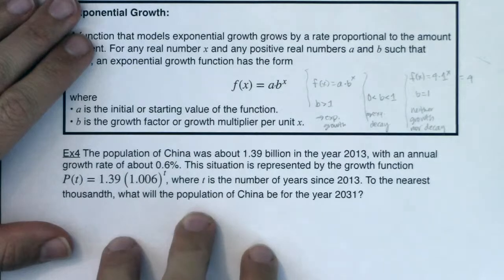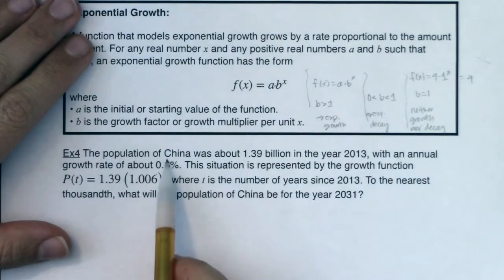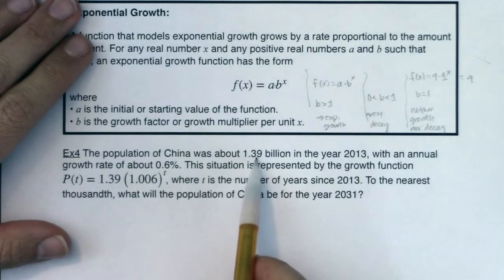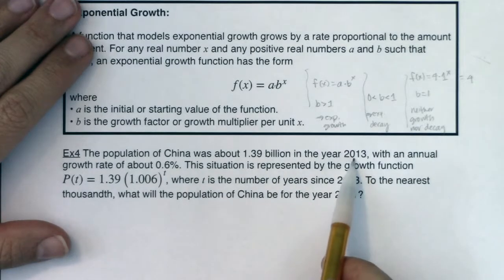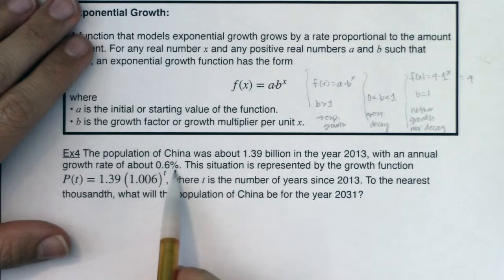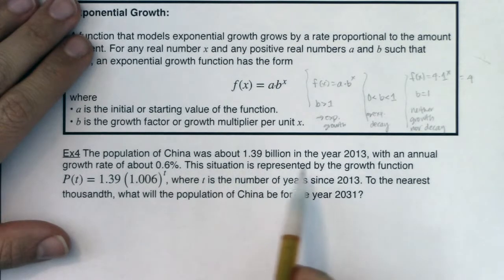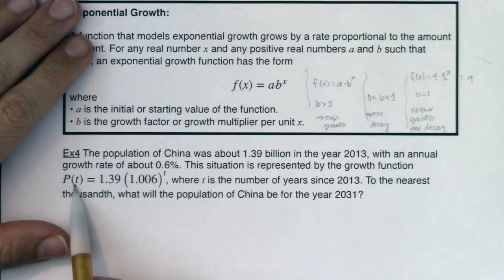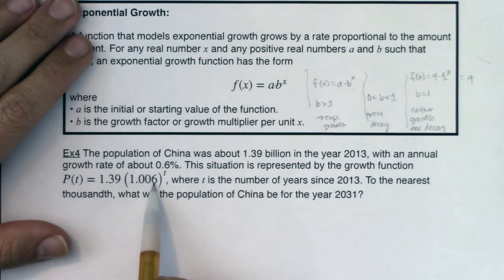So with that, let's take a look at a word problem. So we have the population of China was about 1.39 billion in the year 2013, with an annual growth rate of about 0.6%. This situation is represented by the growth function. We've got p of t is equal to 1.39 times 1.006 to the t, where t is the number of years since 2013. To the nearest thousandth, what will the population of China be in the year 2031?